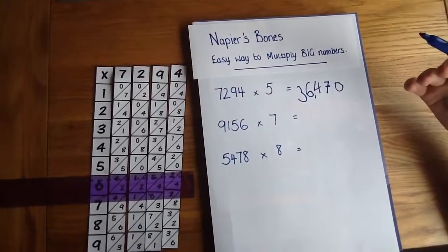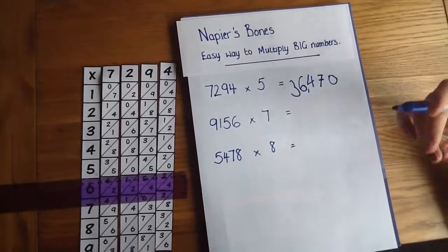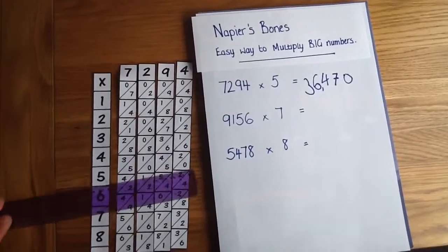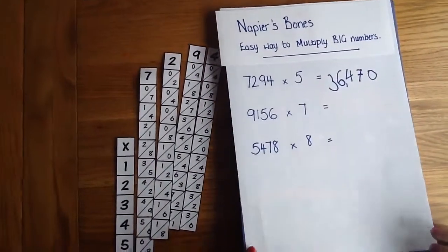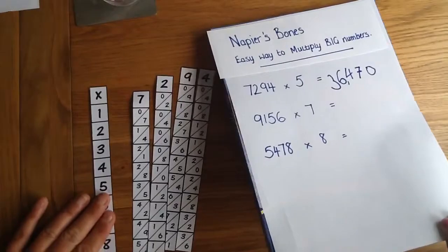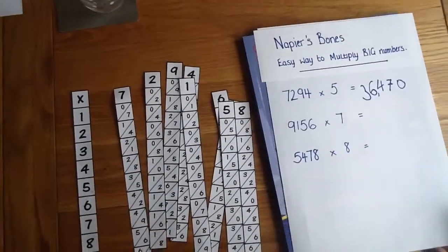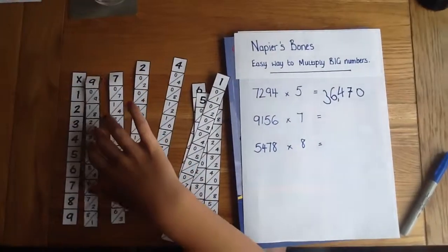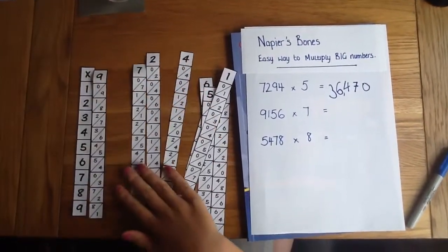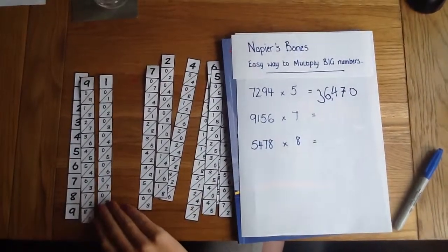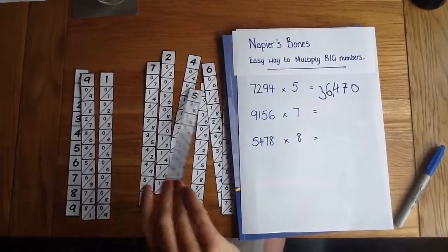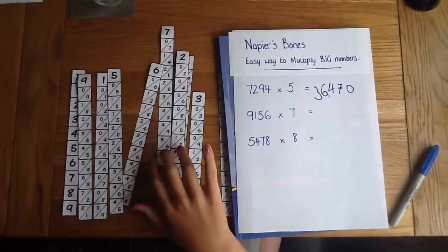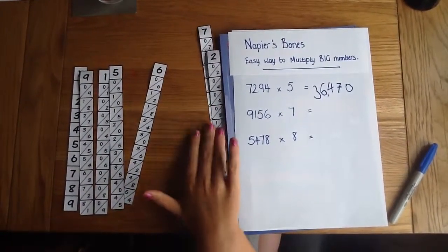Okay we'll show you another one so you can get to it. So the next thing we're going to do is 9,156 times 7. So again we're going to go back to our columns and we're going to find 9,156.